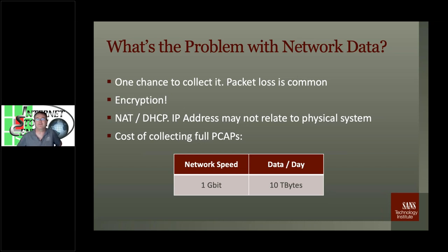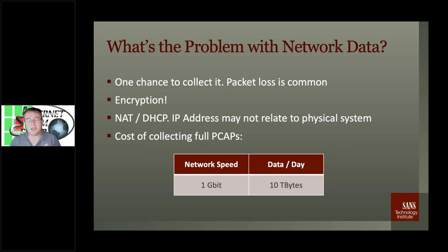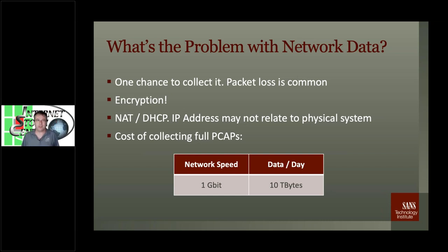Just to give a little perspective on how much data we're talking about — these are rough order-of-magnitude estimates — for one gigabit network fully utilized, you're talking about 10 terabytes a day. 10 terabytes is affordable. But do that for a month and you're talking about 300 terabytes, and now you're talking real money. A lot of the data you're collecting may actually be useless because it's encrypted.